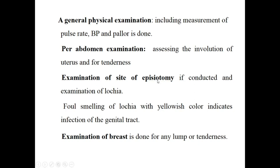The first postnatal checkup comprises a general physical examination including checking vitals such as pulse rate and blood pressure, per-abdomen examination to assess involution of the uterus — the uterus after delivery should come at least to the level of the umbilicus; if it does not, retained membranes or placenta is suspected — examination of the episiotomy site if conducted, examination of the lochia, and breast examination.